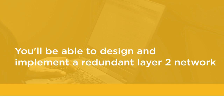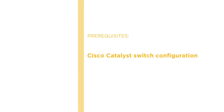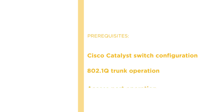Before beginning this course you should be familiar with Cisco Catalyst Switch Configuration, 802.1Q Trunk Operation, and Access Port Operation, which can be learned in the previous videos in the CCNA Learning Path.